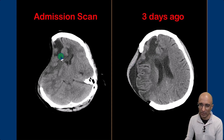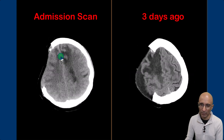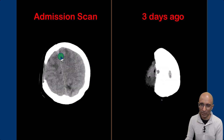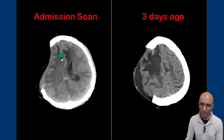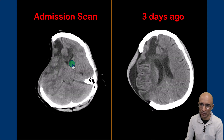The images on the left correspond to the CT which was performed when the patient presented to the emergency department. As you can clearly see, the skin flap is sunken. There is also paradoxical herniation of the brain to the contralateral side, and you can clearly see the subfalcine herniation.